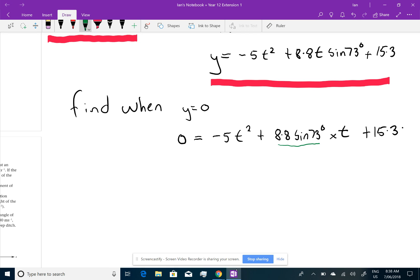That is equal to 8.41548 dot dot dot and you can leave that in your calculator. So, what have I got? 0 equals negative 5t squared plus 8.4 dot dot dot t plus 15.3